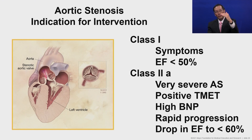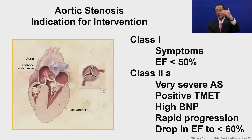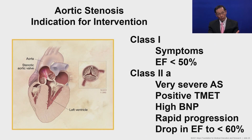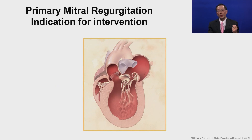With those parameters in mind, the threshold for intervention has been lowered. Class 1 indications remain severe aortic stenosis with symptoms or ejection fraction fallen below 50%. Class 2A now includes very severe aortic stenosis in the asymptomatic patient with a positive treadmill, high BNP, rapid progression, or a progressive drop in ejection fraction to still-normal but less than 60%. Strain imaging and gadolinium enhancement defects will further help identify patients developing irreversible myocardial fibrosis, particularly if they are at low risk for intervention.